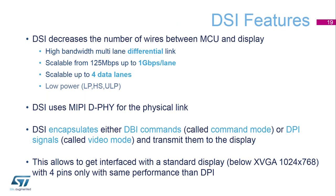The DSI decreases the number of wires between the MCU and the display. It supports high-bandwidth multi-lane differential links, scalable from 125 Mbps to 1 Gbps per lane, and scalable up to 4 data lanes. It also supports low power modes — the MCU can be in stop mode while the display is on. The DSI uses the MIPI D-PHY for the physical link. It encapsulates either DBI commands or DPI signals and transmits them to the display, allowing interfacing with a standard display below VGA with only 4 pins and the same performance as in DPI mode. Another advantage is that it allows over 15 cm long cable between the MCU and the display.